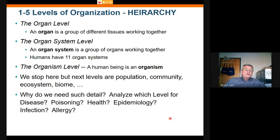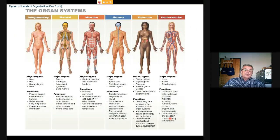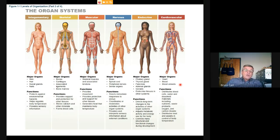We are well-founded if we understand levels of organization. Here is an enlargement of those levels and the major organ systems. The integumentary system basically covers and protects the body, is active in regulating body temperature, and helps us sense the outside environment.